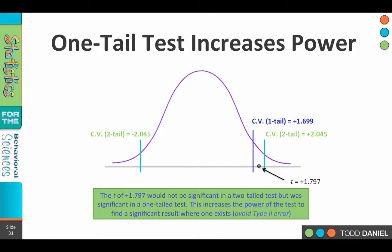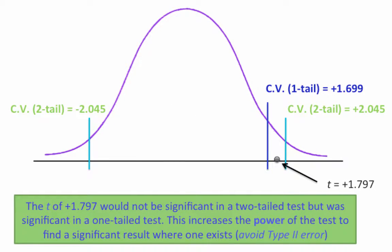Let's look at this on the normal curve. The critical value cut-off for the two-tailed test is shown at ±2.045. The critical value for the one-tailed test is positive 1.699. Notice where our t-value falls — at positive 1.797 — it's between those two lines. So is t = 1.797 statistically significant with a two-tailed test? No, it does not exceed 2.045. But is it significant for a one-tailed test? Yes — it exceeds 1.699.